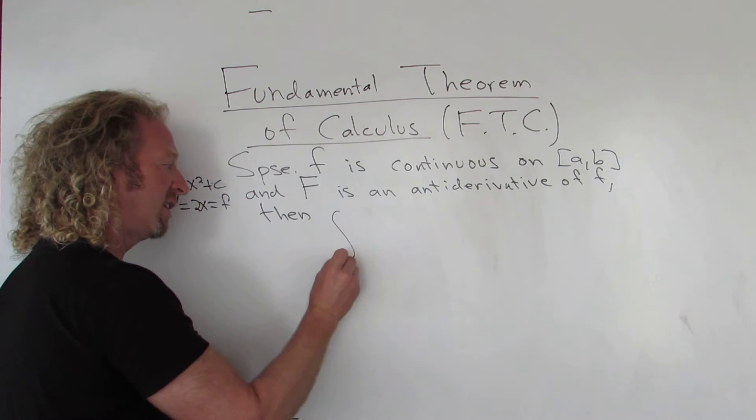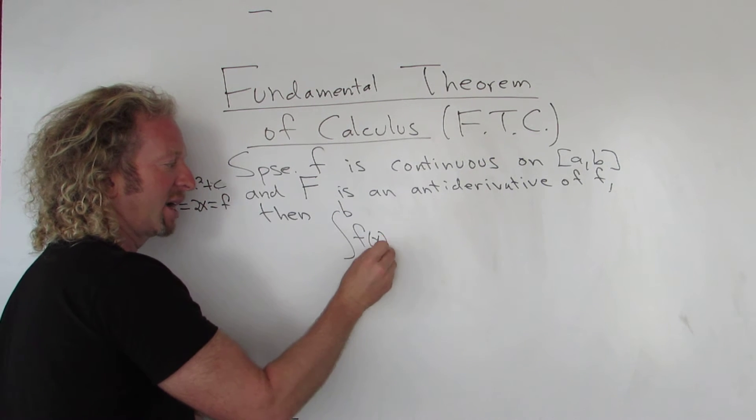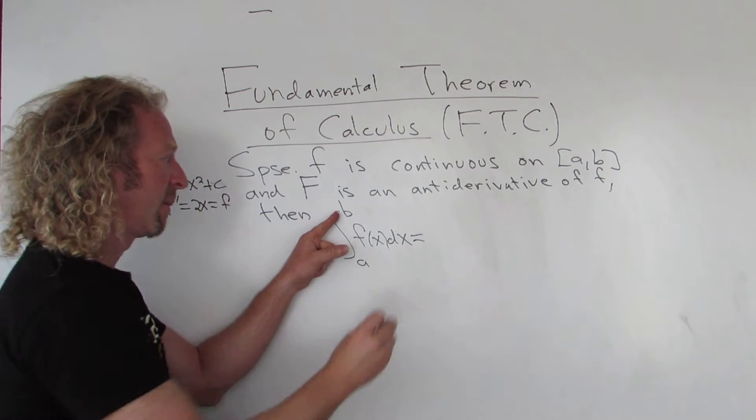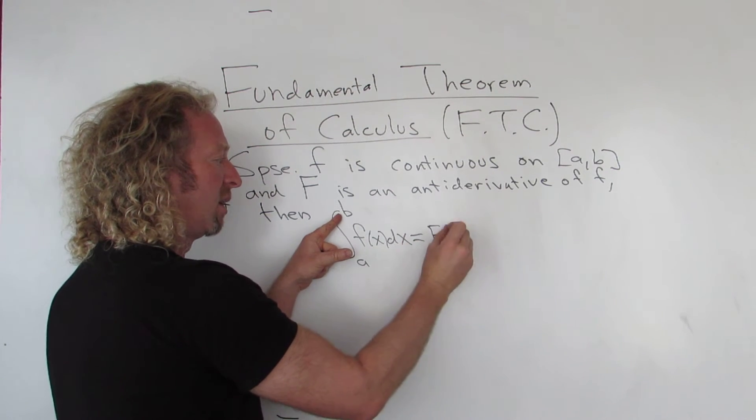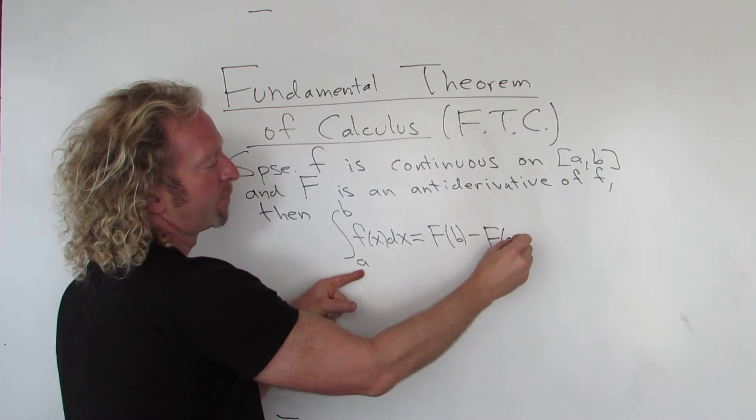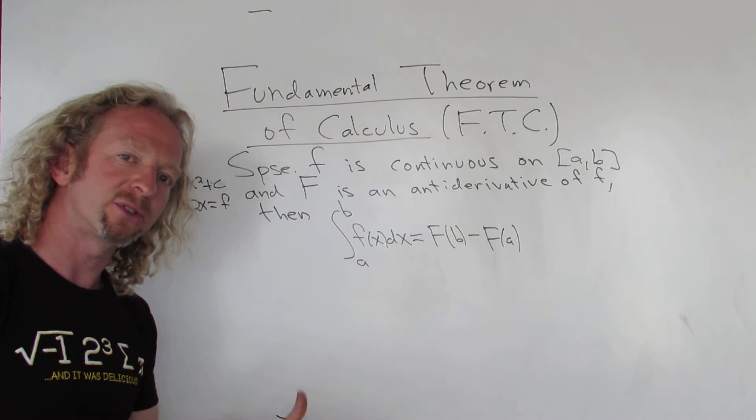Then the definite integral from a to b of little f with respect to x is equal to big F of b minus big F of a.